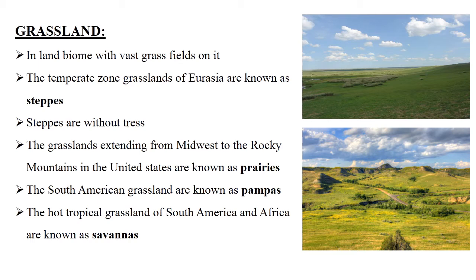The grasslands extending from the Midwest to the Rocky Mountains in the United States are known as prairie. Prairies are enormous stretches of grass — flat grassland with moderate temperature, moderate rainfall, and few trees. Cereal crops grow and cattle graze in prairies, with little animal life.